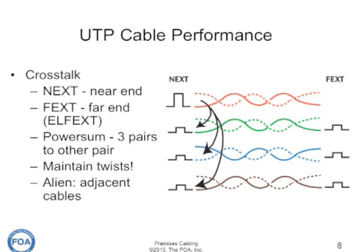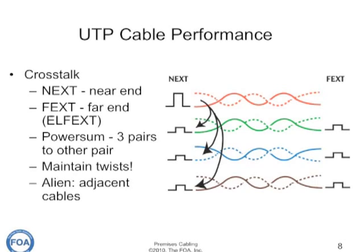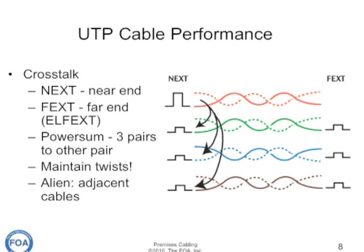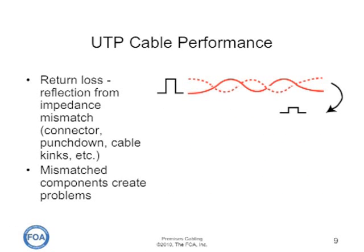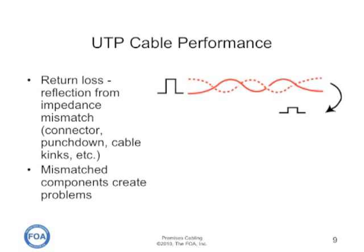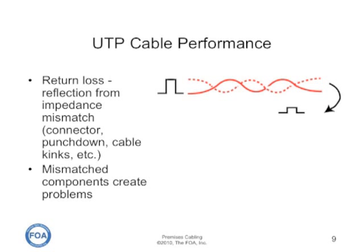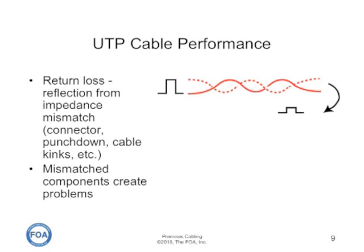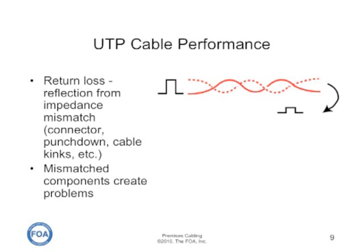With category 6A cable, there's another problem, and that's alien crosstalk, going from cable to cable. Return loss is a reflected signal caused by an impedance mismatch. The impedance mismatch is usually caused by improperly making connectors, generally leaving too much wire untwisted, or kinks in the cable. Mismatched components can also create problems, which is another reason you want to make sure that all components are of the same category grade, and at the highest category grades, perhaps even from the same manufacturer.